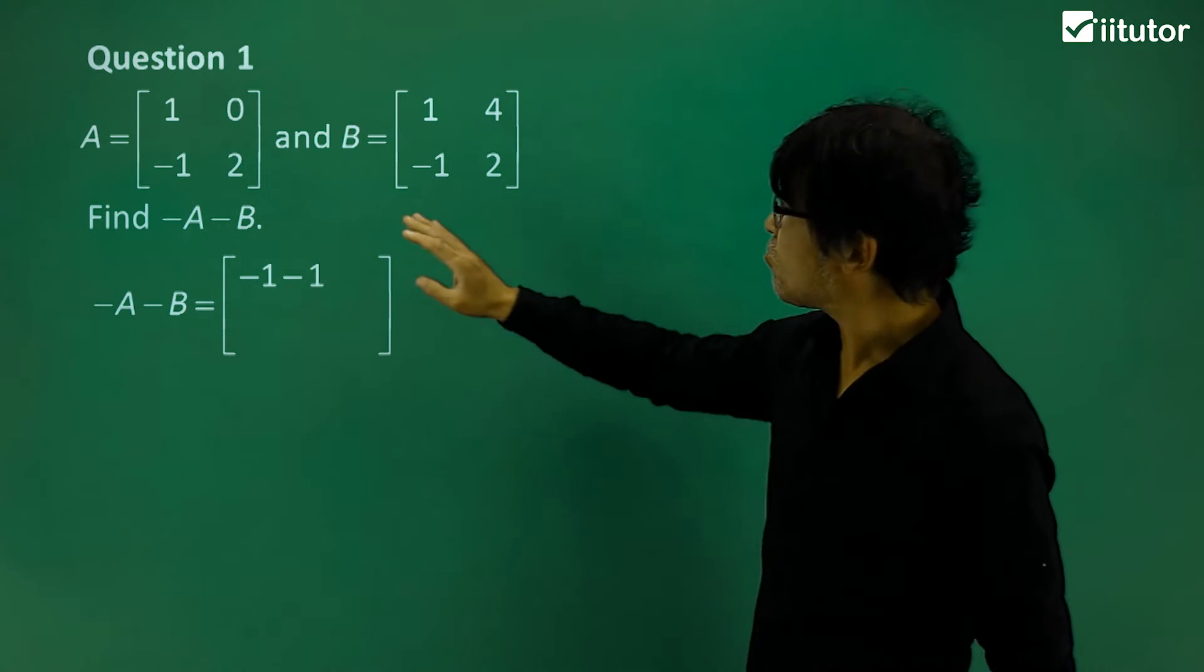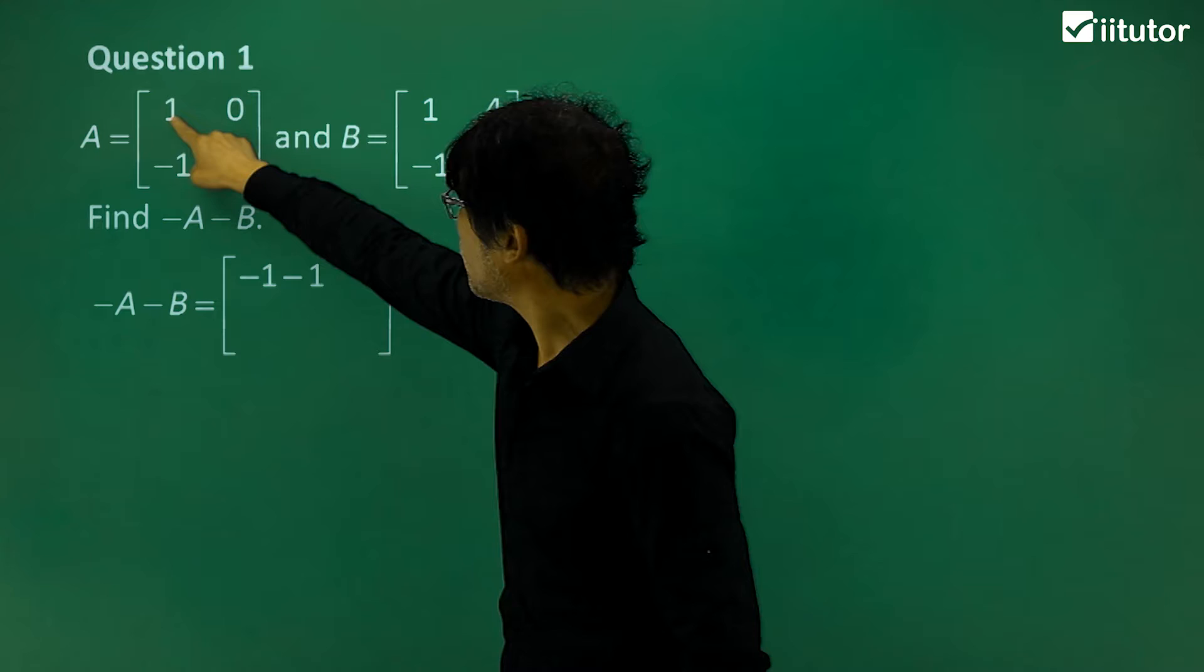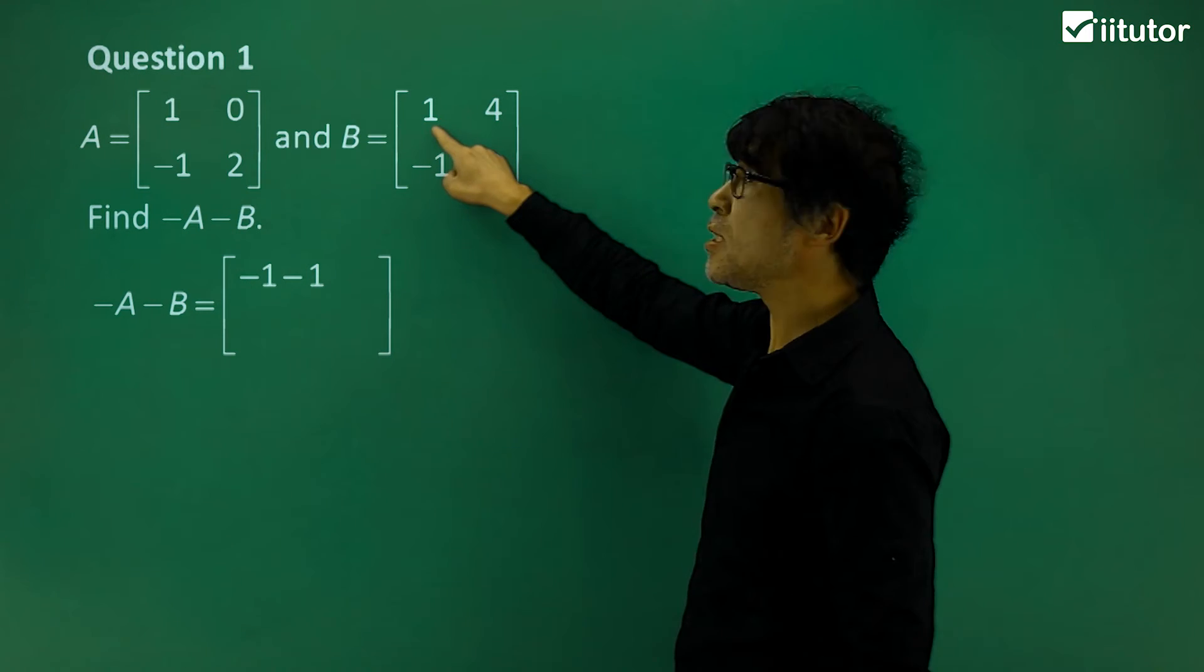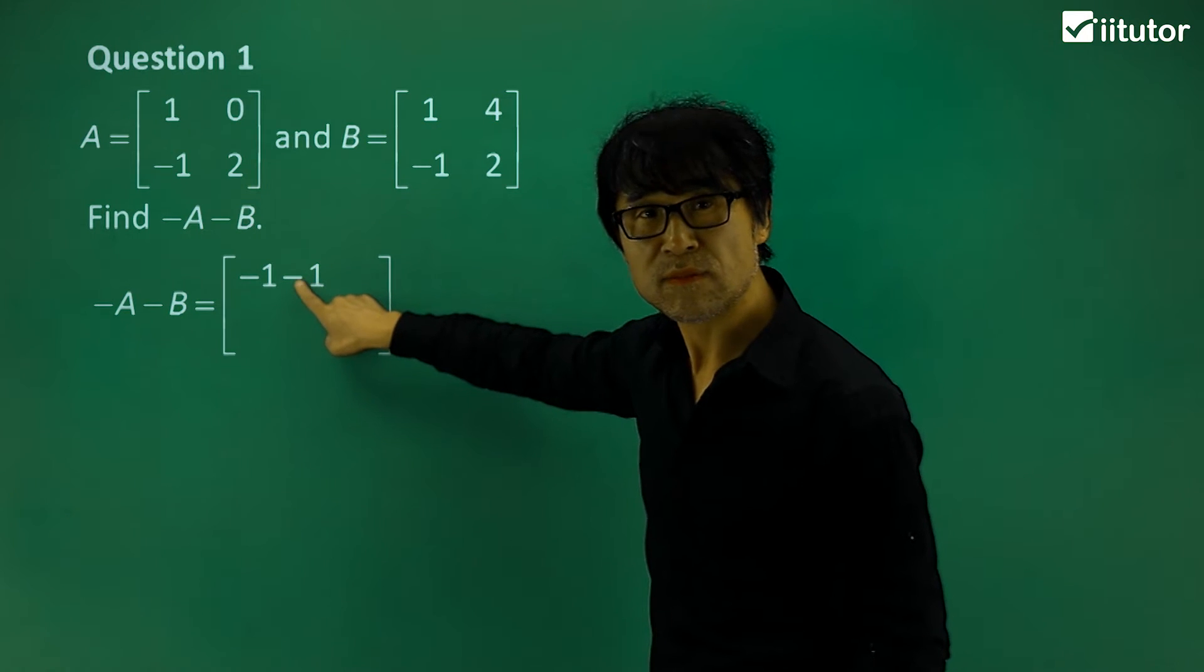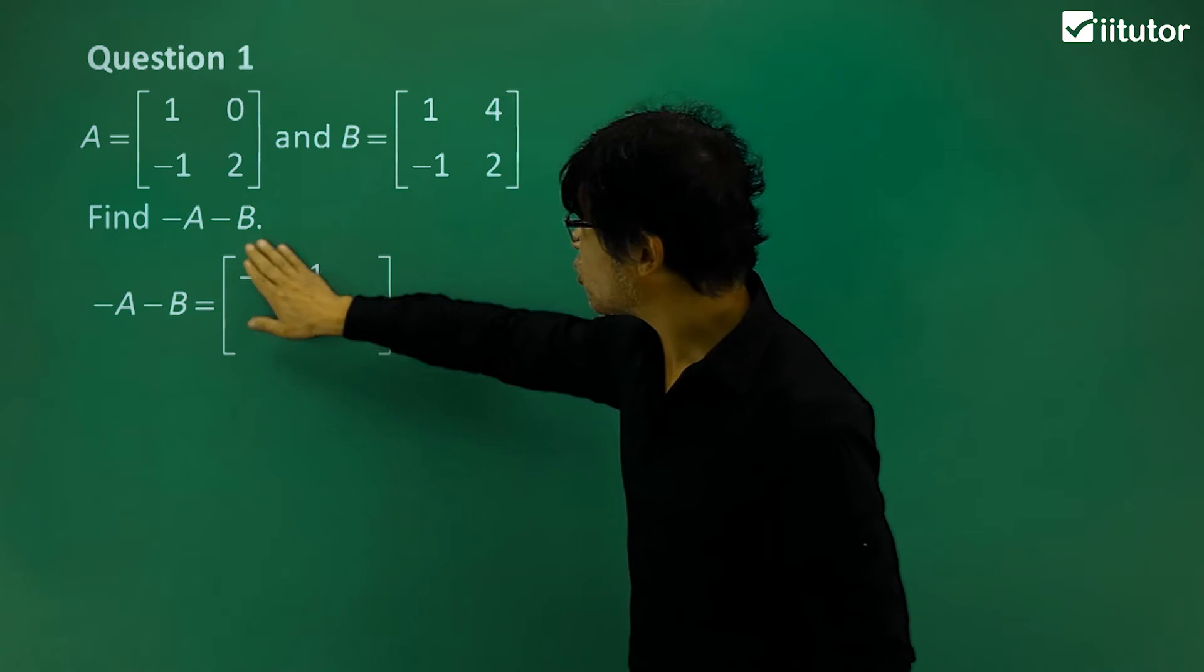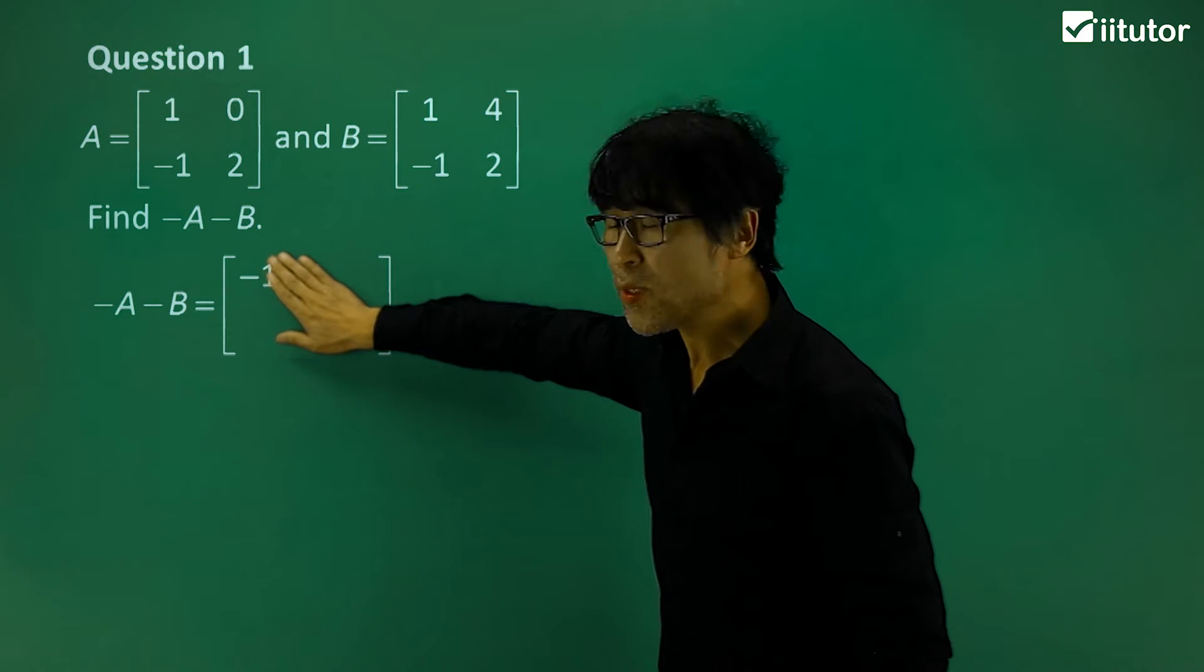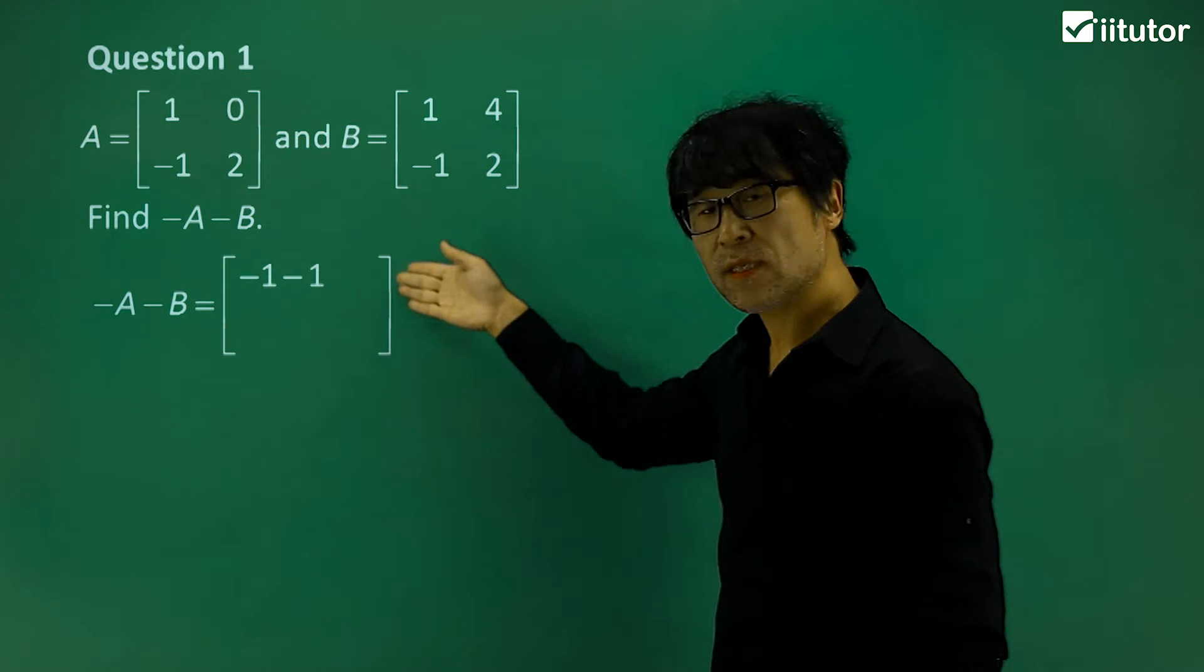So first of all, you have to work on negative A. What's the first element of matrix A, which is 1, so we put negative in front of it. And what's the first element of matrix B, which is here. Can you see that? So that's 1, so we made it as negative, so it will be negative 2 at the end of the process. So we jump on to second part. The first column, first row, the first row and first column, we move to the first column, second row. First row and the second column.